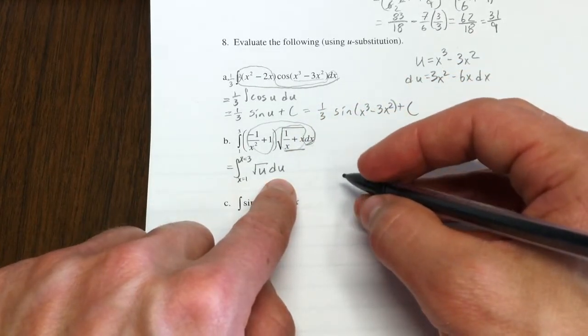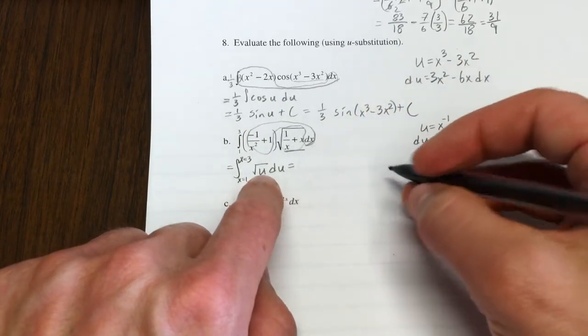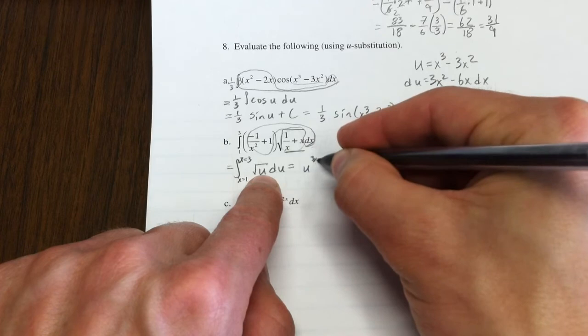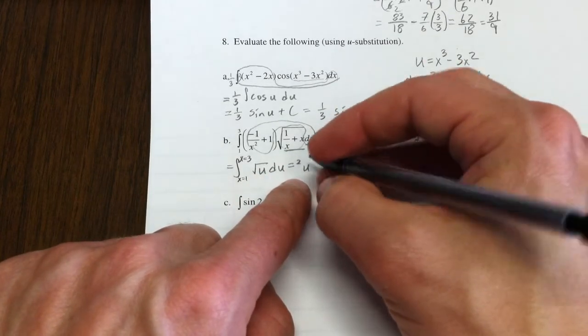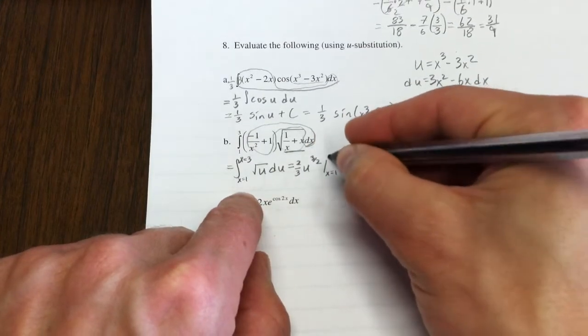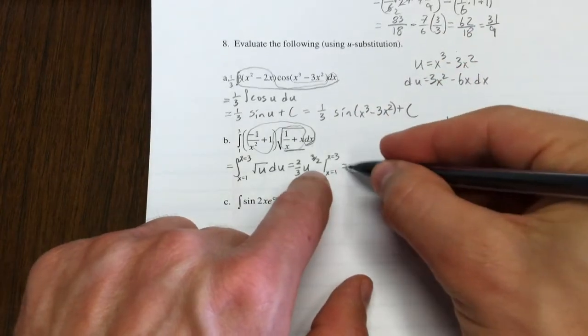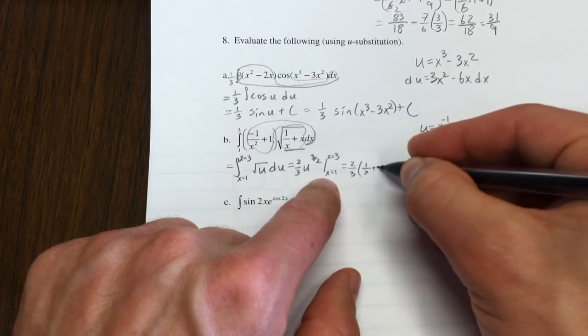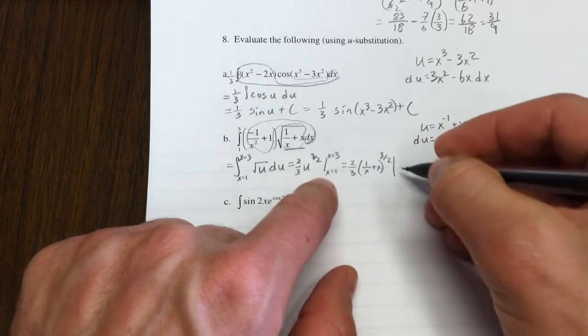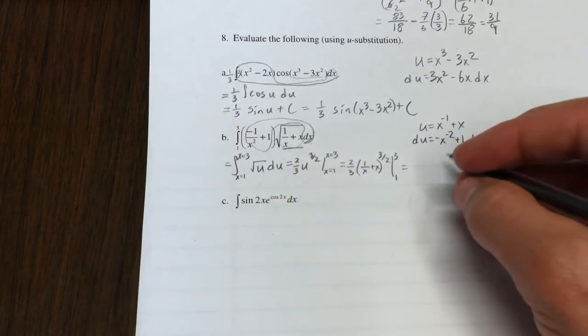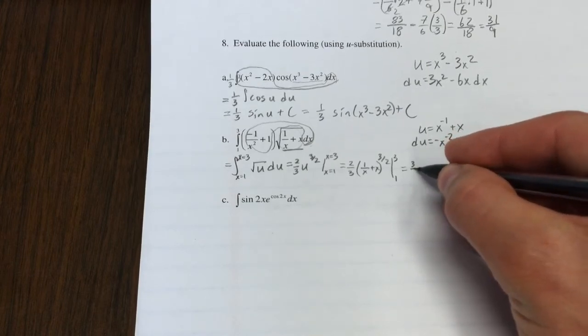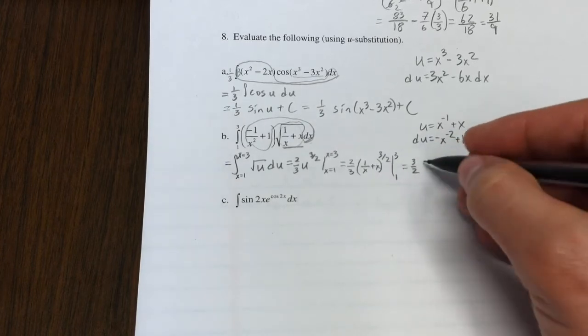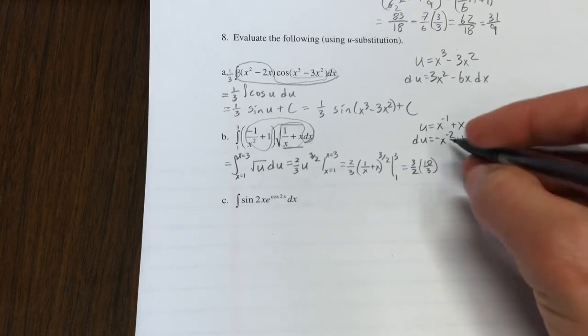You could really think about this instead of the square root of u du as being u to the one-half, in which case it would be u to the three-halves times the reciprocal of that, which is two-thirds, evaluated x equals 1, x equals 3, substituting back in for what u actually is. That's two-thirds, 1 over x plus x to the three-halves evaluated at 1 and 3. That might be a little bit of work. Evaluating that at 3, I get one-third plus 3. That's 10 thirds to the three-halves.